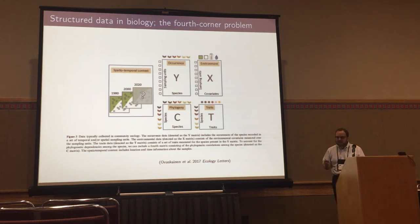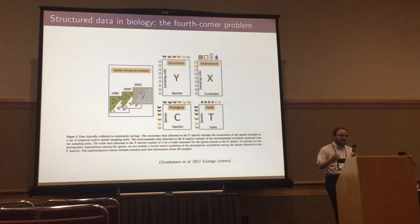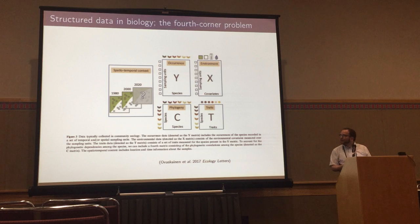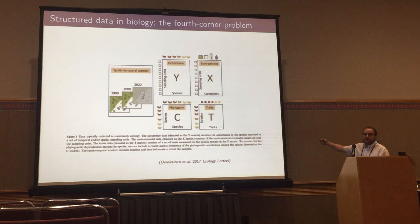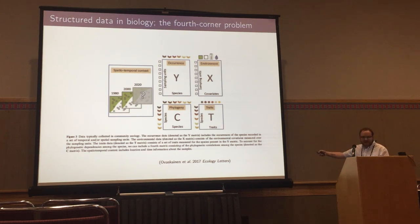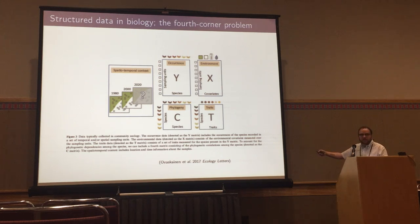A big problem here with dealing with so many different data types — and also a common issue when dealing with large-scale questions in evolution and ecology — is that we have extremely structured data with lots of different sources. In this case, we would be looking at species through time: their occurrences at sampling units through time, environmental variables for each of these sampling units through time, the biology of these species, and the traits of these species. My goal is to get essentially all of these things to talk to each other so we can predict why things are occurring.